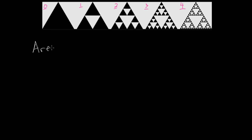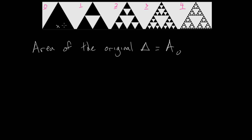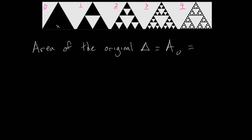Let's say that the area of the original equilateral triangle is equal to a sub zero — the area at step zero. We could find a formula for this based on the side lengths, which we call x: it would be (√3 × x²) / 4, the formula for the area of an equilateral triangle with side length x. But let's think about this less formally and just assume the area of the original triangle is some constant a sub zero. At the end, we can plug in the actual formula if we want.